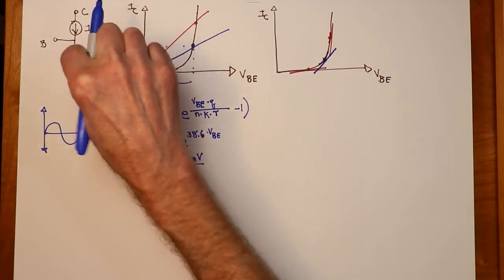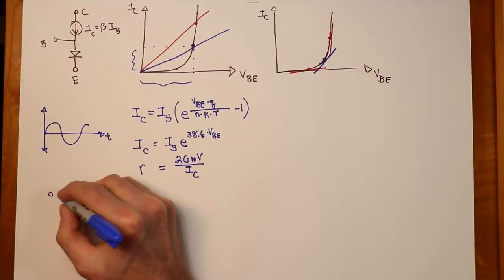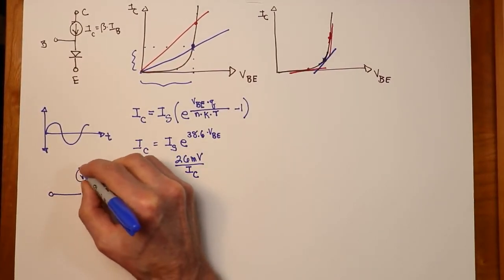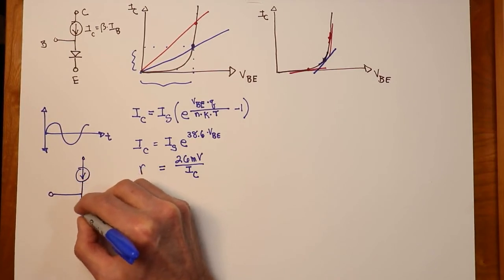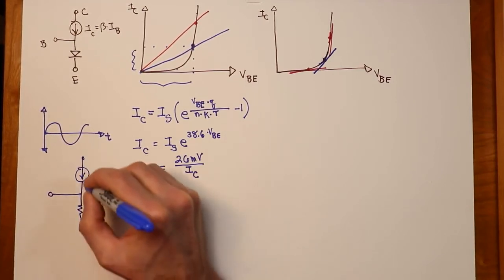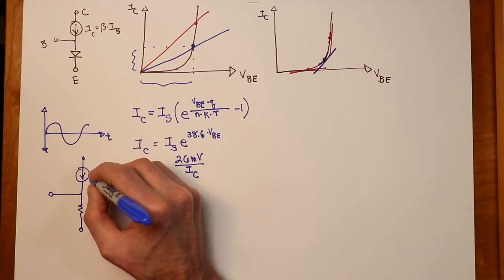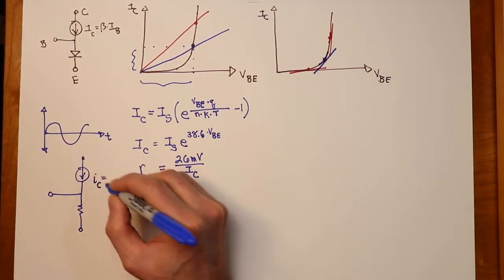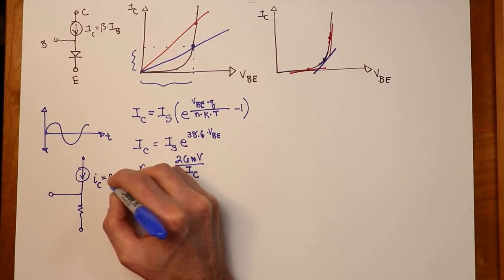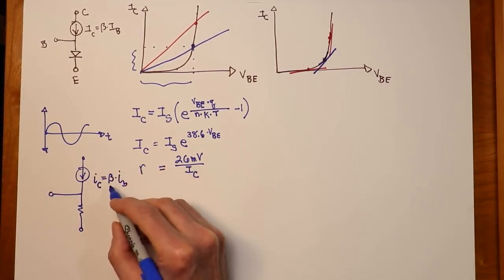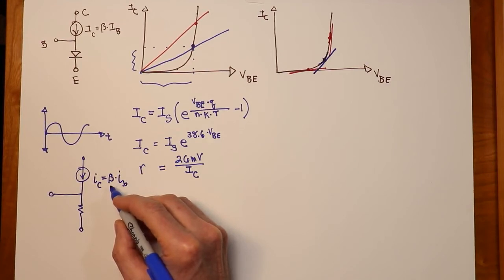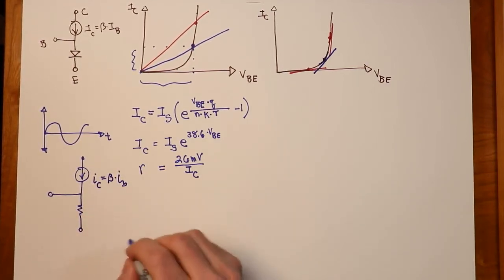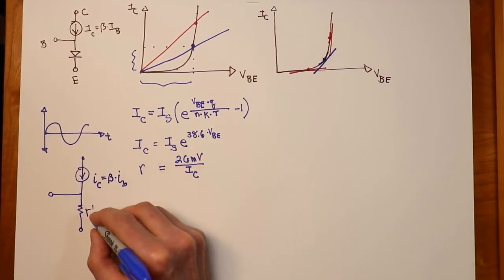This R value is what replaces the diode, so our model winds up looking like this. We have a current source. This is the AC current source. IC is equal to beta IB. Technically, this is the AC beta versus the DC beta, but it's very close. This is the value that we just computed. We call this R prime E.